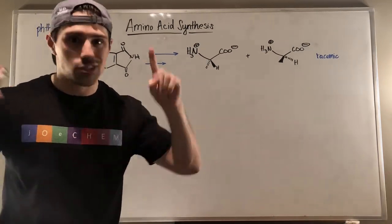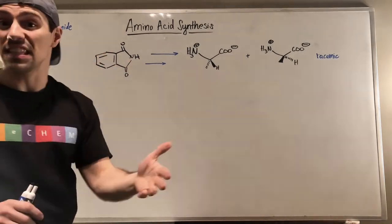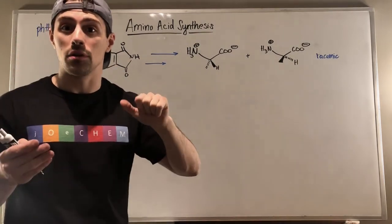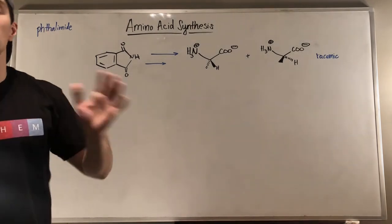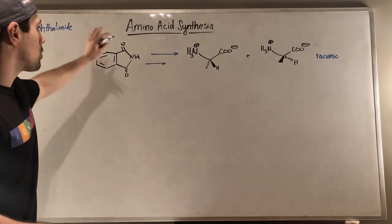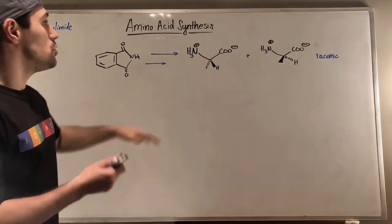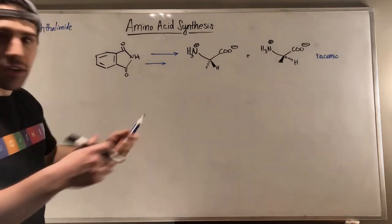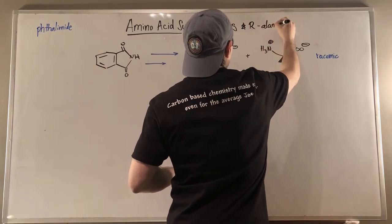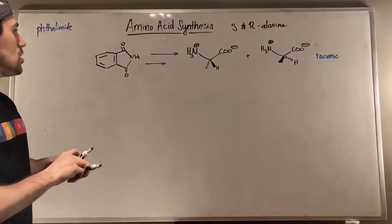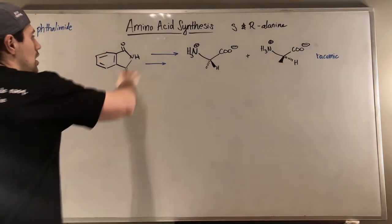So if we look at what's going on right here, we are going to take this structure — which you can synthesize through the Gabriel synthesis (I'll put the link for that reaction video in the description) — but this is phthalimide. It's very accessible, very common. So from phthalimide, I'm going to show you how you can use it and leverage it to make what over here is alanine. And it's going to happen in a racemic mixture, so we're going to make both S and R alanine in equal amounts.